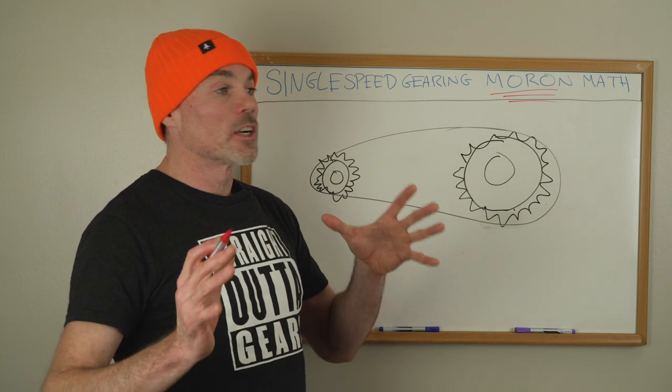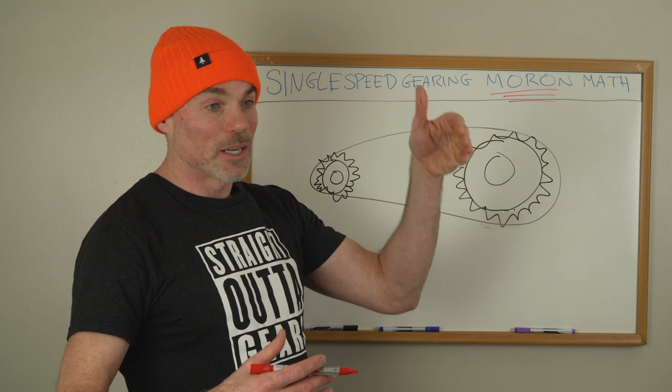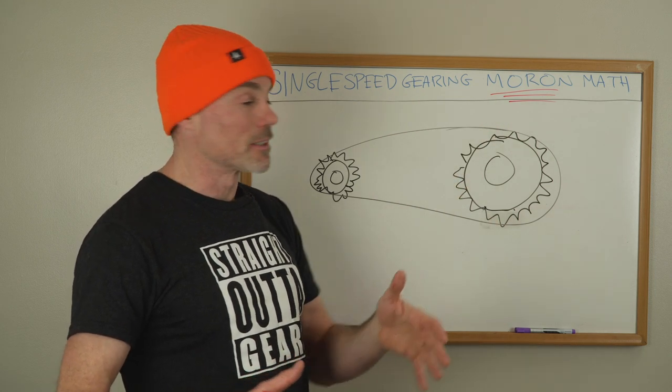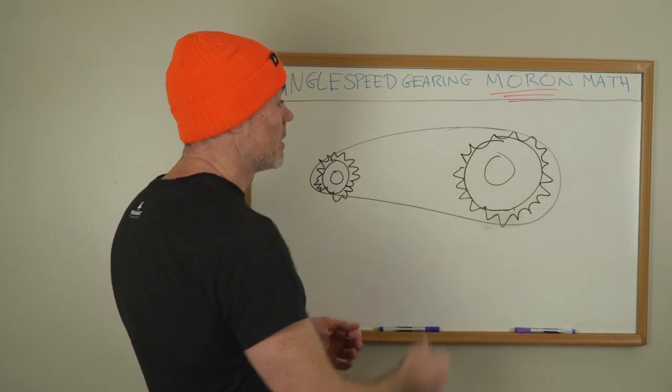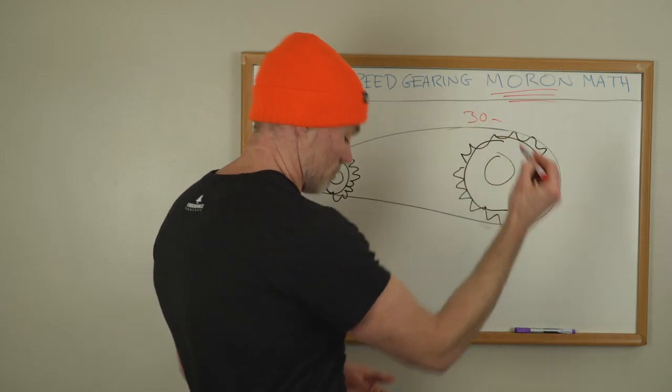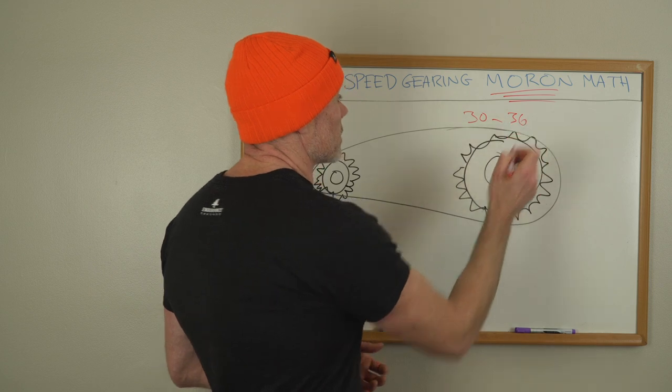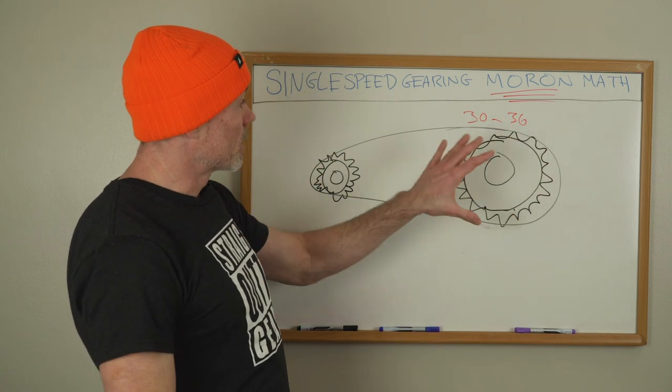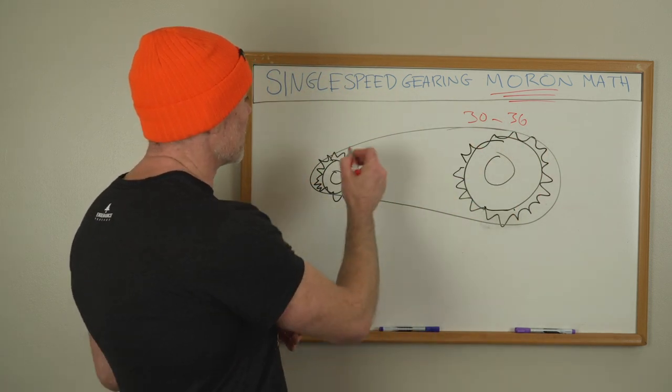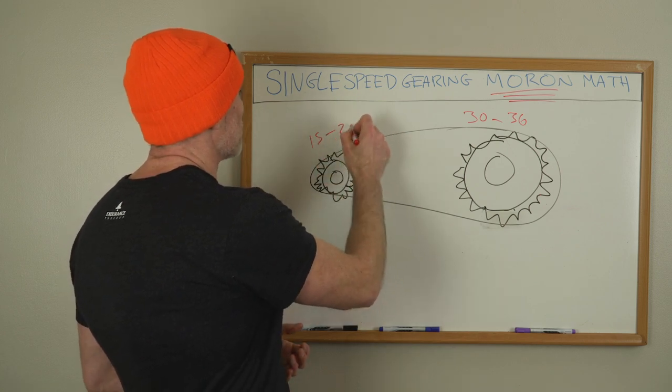Big chain ring means hard, that's a hard gear. Big cog means easy. That's just the way gears work. So if you're trying to make your gear harder, like a faster gear, not so good for going up, better for going across flats and down things, to make the gear harder you add more teeth in the front. Generally single speeds are going to be from 30 to 36, I mean you can go nuts but generally that's your single speed chain ring range. And then the back you could go anywhere from I don't know, let's say 15 to 22.